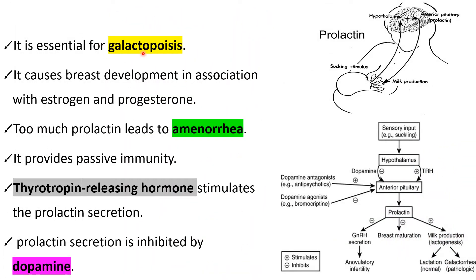Prolactin hormone is essential for galactopoiesis — that is, the continuation of the production of milk, or the continuation of the lactation process once it has been established. Prolactin also causes breast development in association with estrogen and progesterone. Estrogen and progesterone play a key role in development of the breasts, and prolactin also contributes toward breast development in association with these hormones.